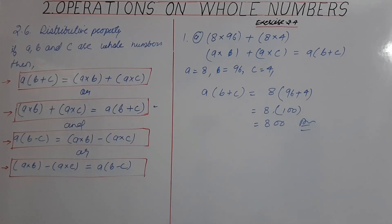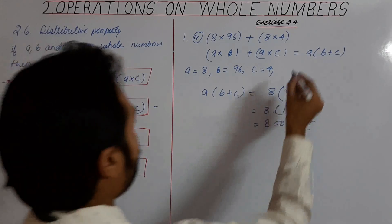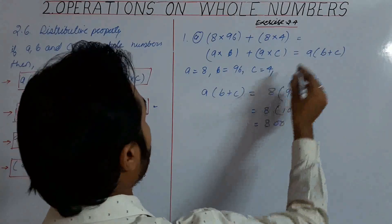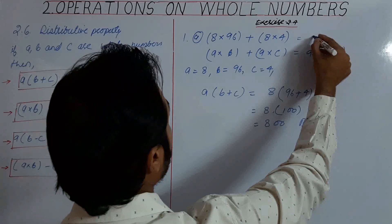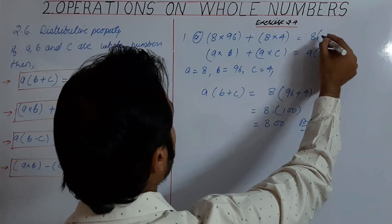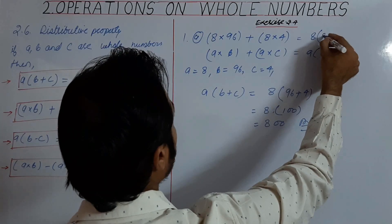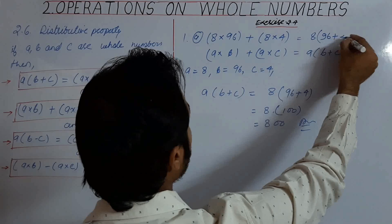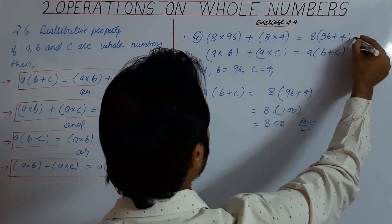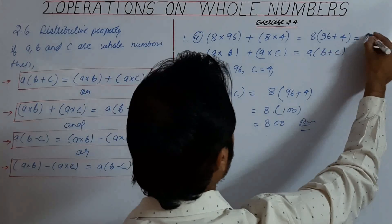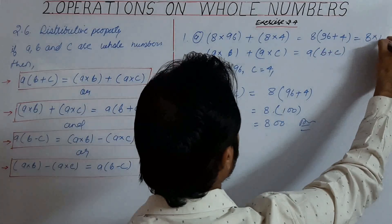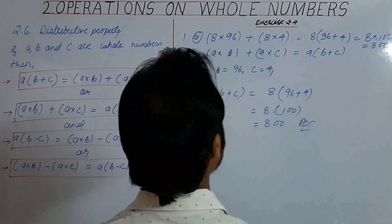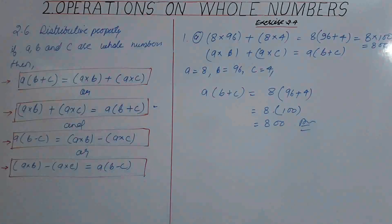Also, in the first line, if we write 8 into 96 plus 4, we'll get 8 into 100, which equals 800.